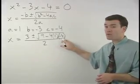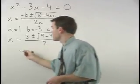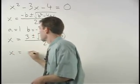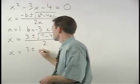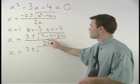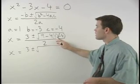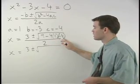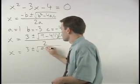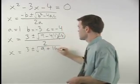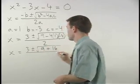Simplifying inside the radical, we have x equals 3, plus or minus the square root of 9, minus 4 times 1, times negative 4, which is 9 plus 16, over 2.